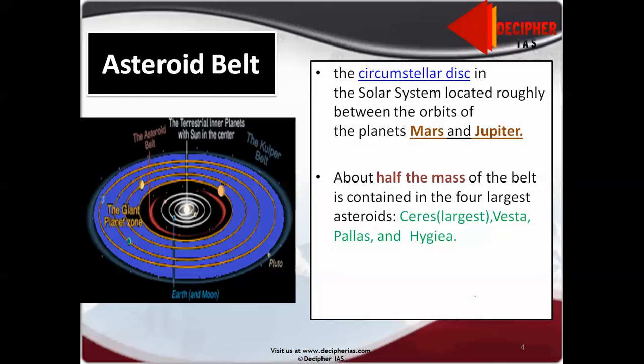Asteroid belt. The asteroid belt is the circumstellar disk in the solar system located roughly between the orbits of Mars and Jupiter. You should know that the planets which are inside the orbit of Mars are terrestrial planets, and those including Jupiter and outside Jupiter orbit are Jovian planets. You are seeing these green patches. About half of the belt is contained in the four largest asteroids: Ceres, Vesta, Pallas and Hygieia.